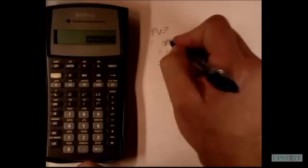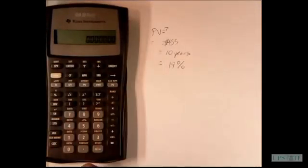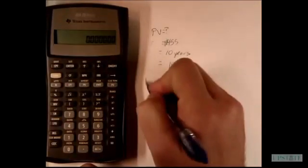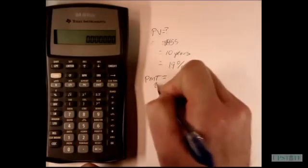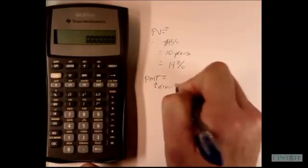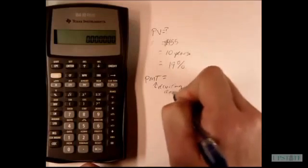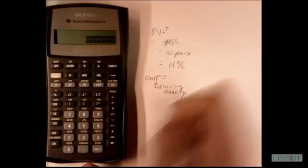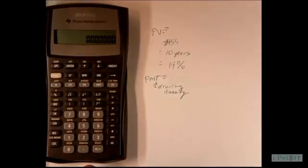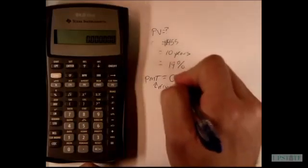Now keep in mind, even though it says payment, it's only a single time. So our payment, this is recurring payments, this is that annuity. So if we don't have, if we only have a single payment, it's not recurring. Our payment here is going to be zero.